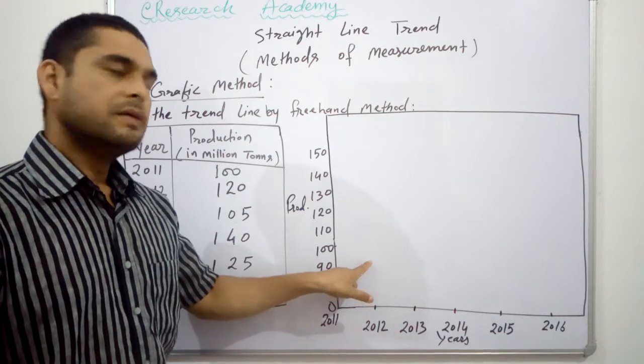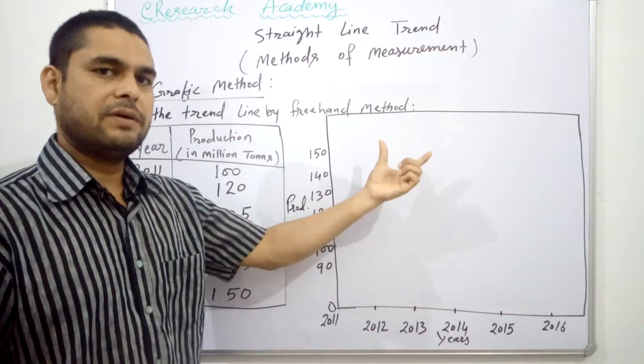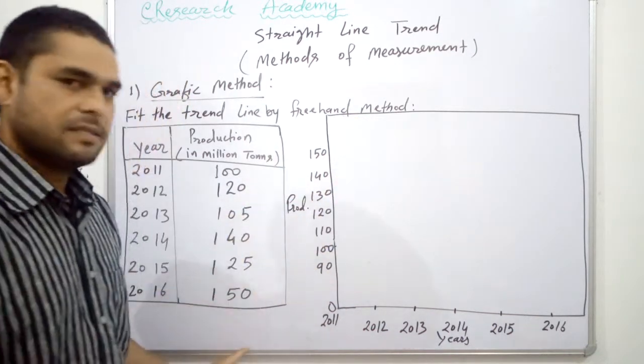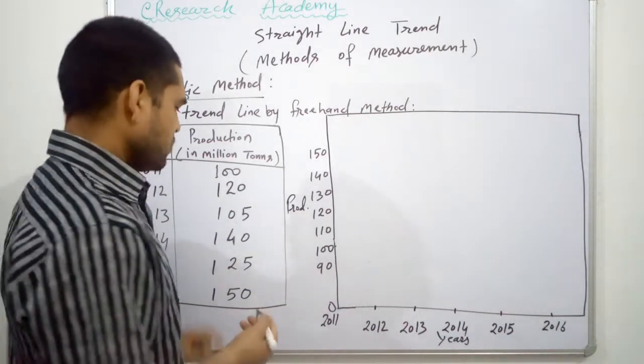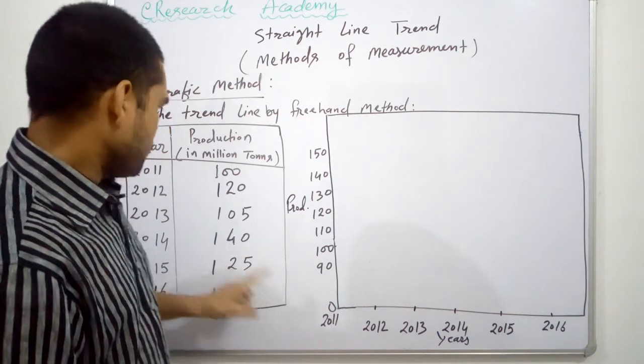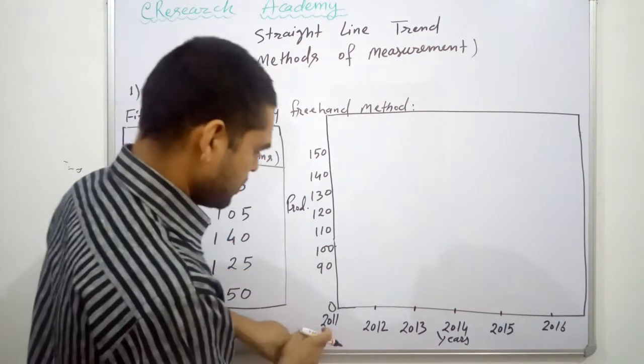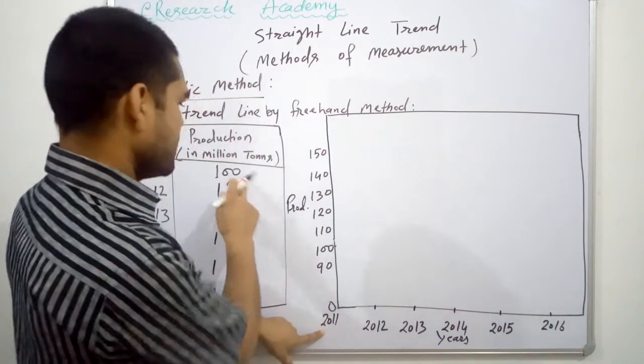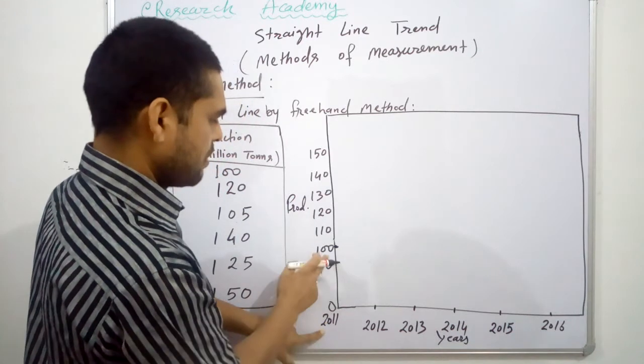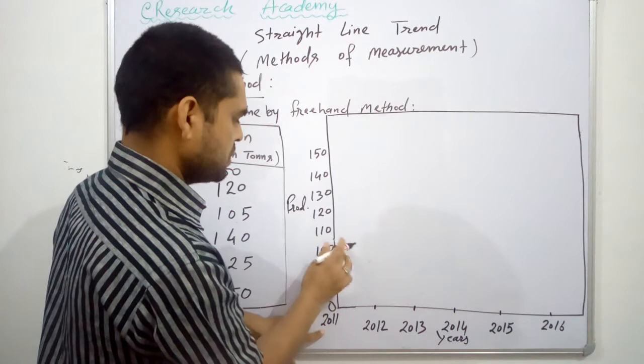This is a very simple method to find out the trend line. By this trend line we simply predict or estimate the future value of this series. Let's start. Our origin is this one and our first data is from 2011. This is 100. In 2011 our production is 100, so we will start from this point.